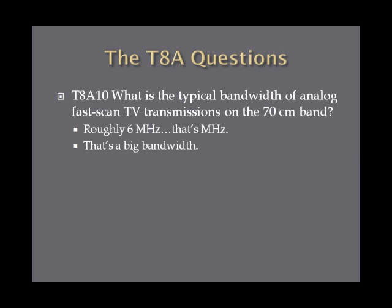What is the typical bandwidth of analog fast scan TV transmissions on the 70 centimeter band? This is roughly 6 megahertz — that's megahertz — so a really big, wide bandwidth. Memorize this one: 70 centimeter band fast scan TV transmissions take up to 6 megahertz of space.